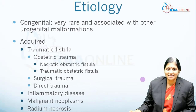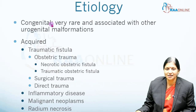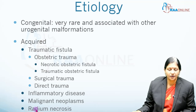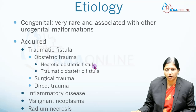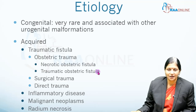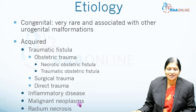Fistulas can be congenital — which is rare and usually associated with other urogenital malformations — or acquired. Acquired fistulas can be traumatic, inflammatory, malignant, or due to radiation necrosis. Traumatic fistulas can be obstetrical or surgical. Inflammatory diseases include tuberculosis and bilharziasis. Malignancies include genital malignancies, and radiation necrosis includes complications from radiotherapy treatment.